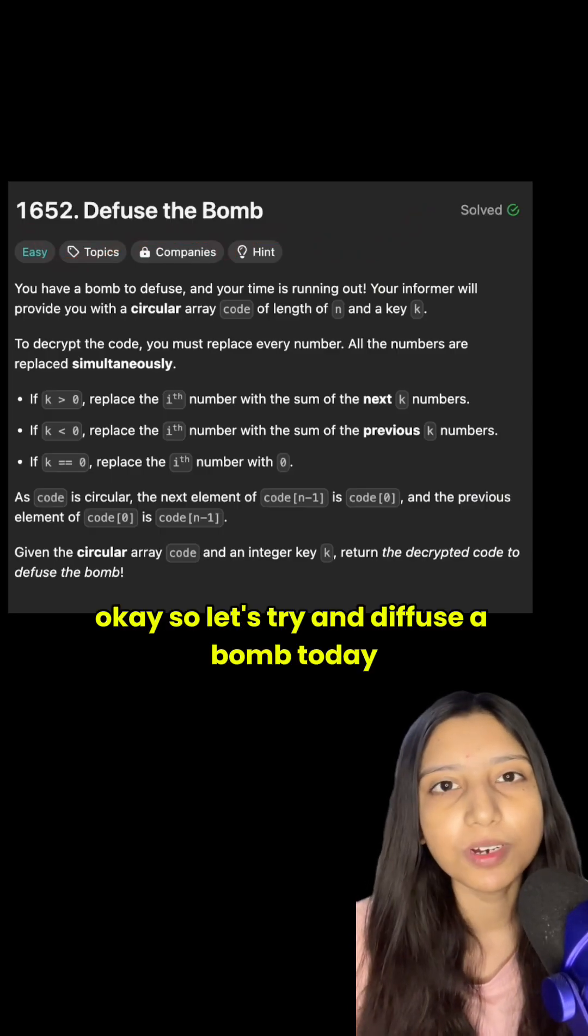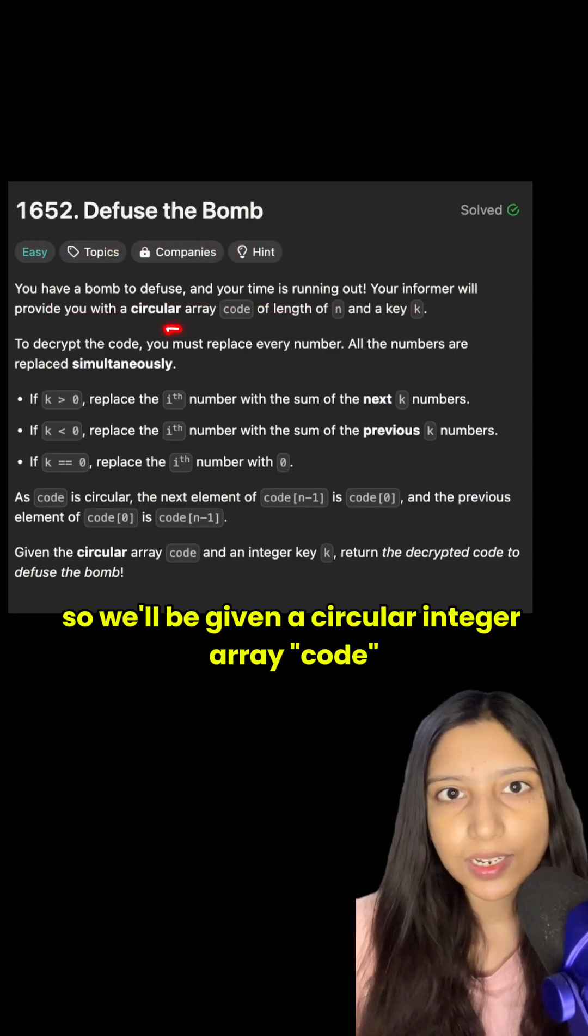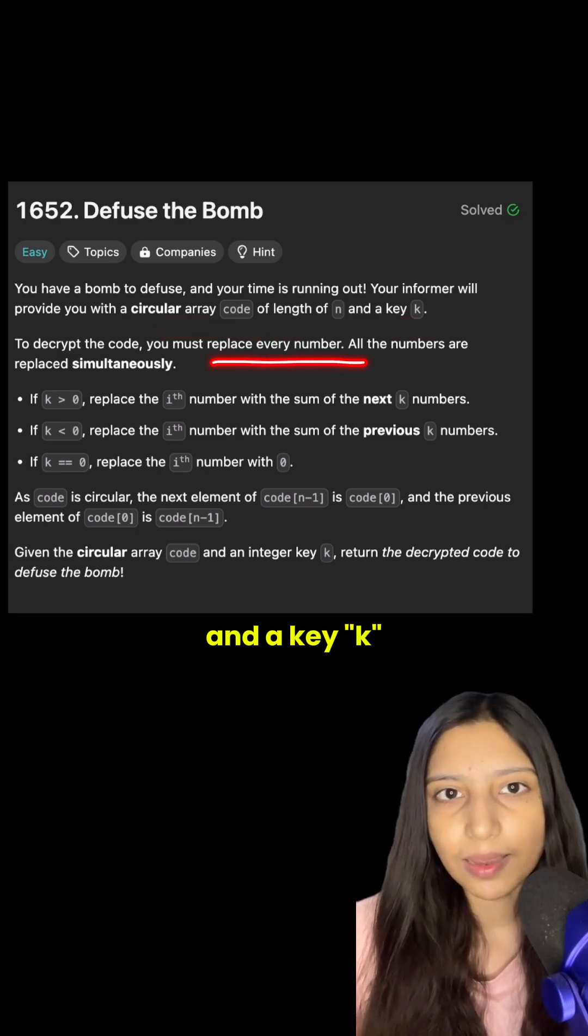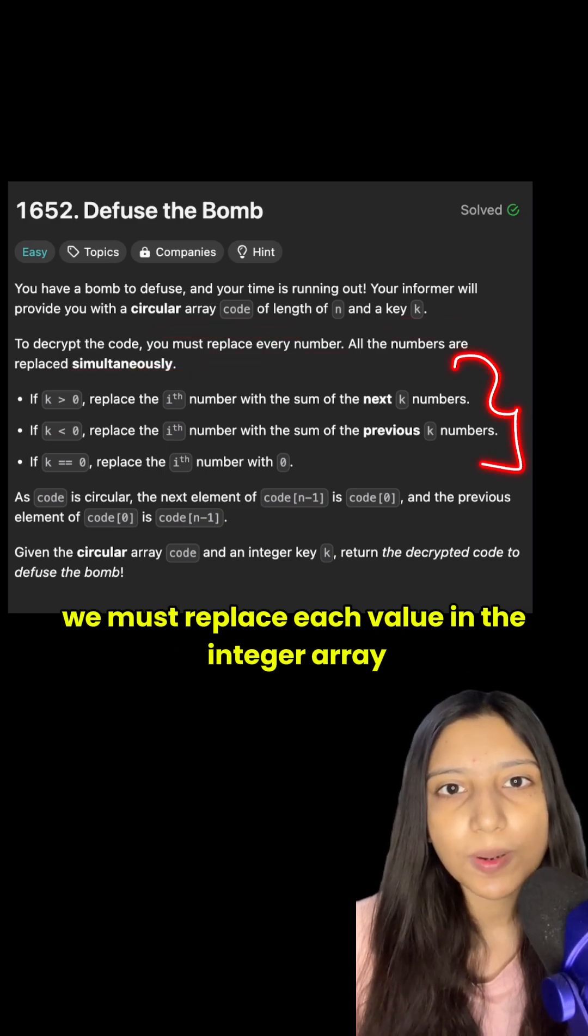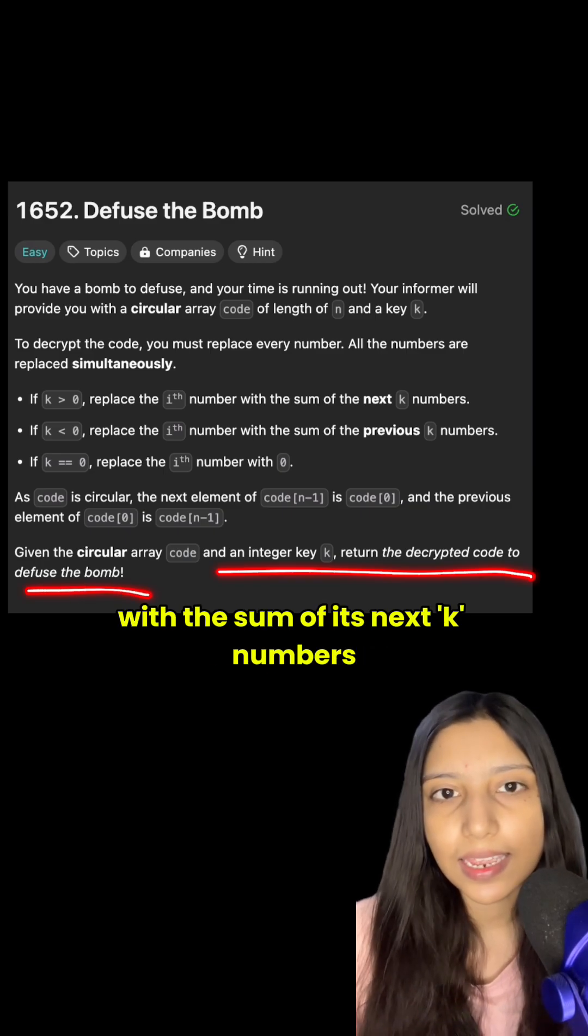Okay, so let's try and defuse a bomb today. We'll be given a circular integer array code and a key k. To decrypt the code, we must replace each value in the integer array with the sum of its next k numbers.